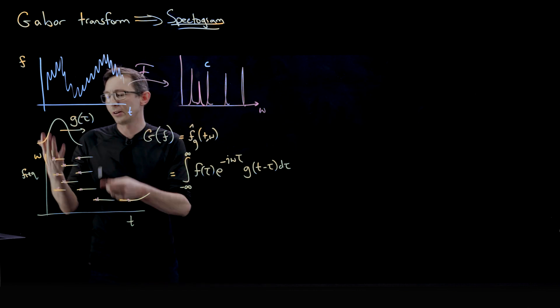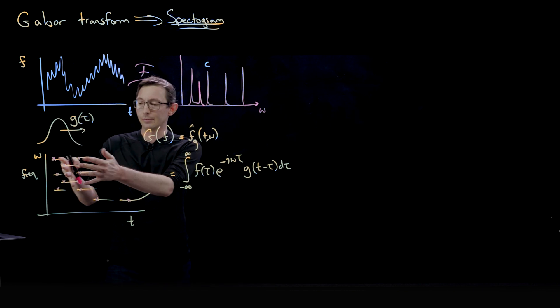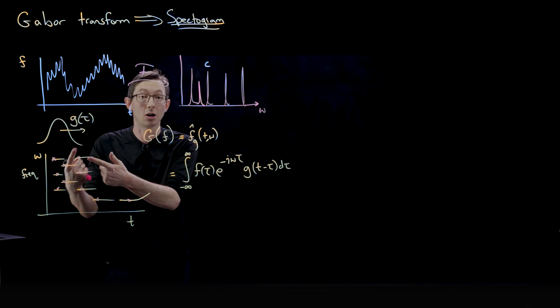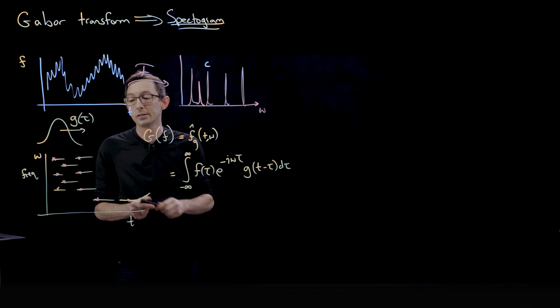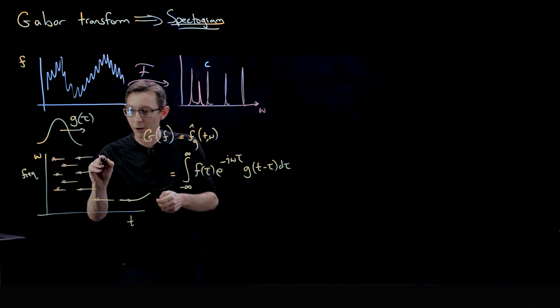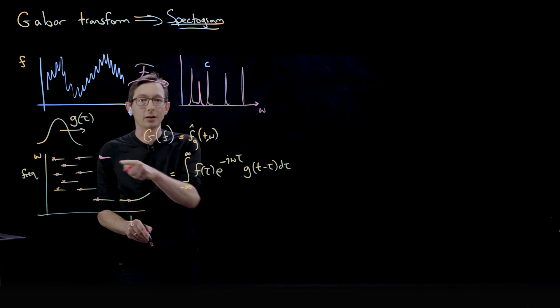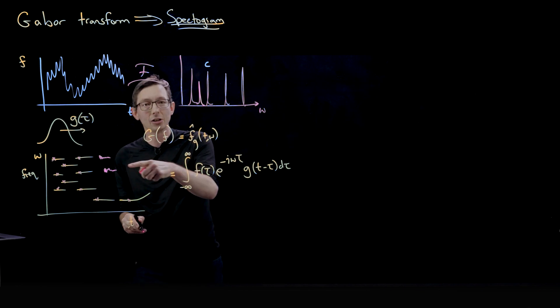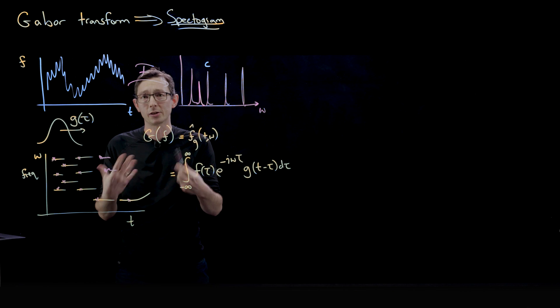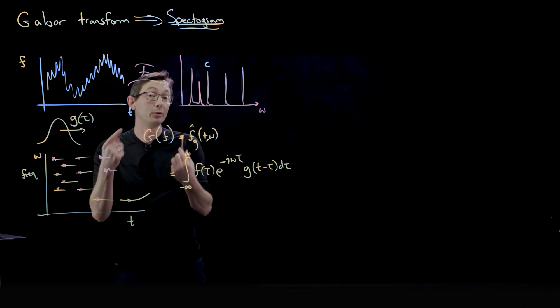You can also, for example, classify if I have some song being played, I can also classify was it played on a guitar or a piano? Was it played on an electric guitar or an acoustic guitar? Because these individual notes being played might look different. They might have a little bit of a trill or some signature of what instrument they were played on or even who played those notes.